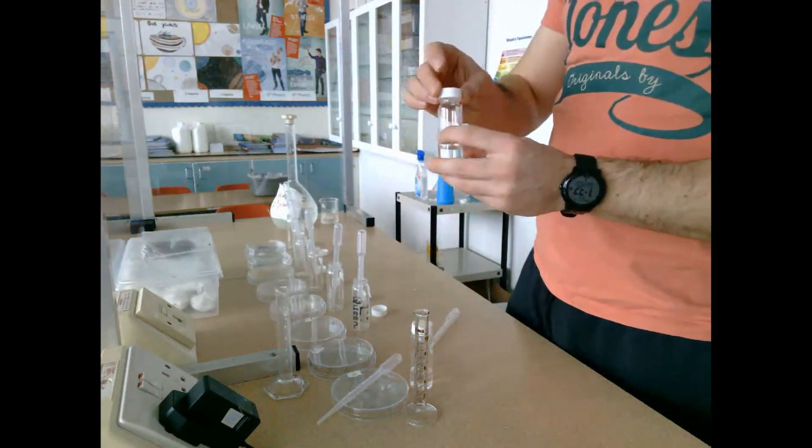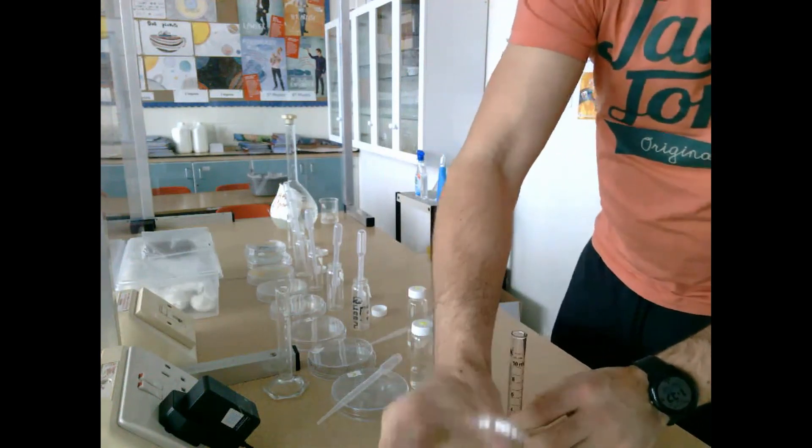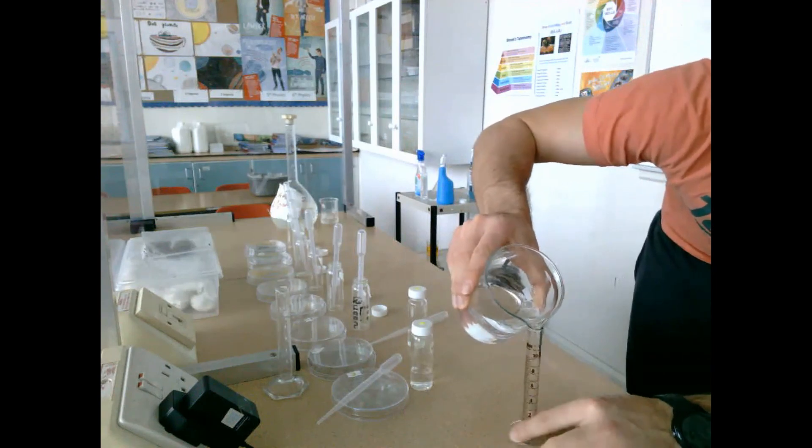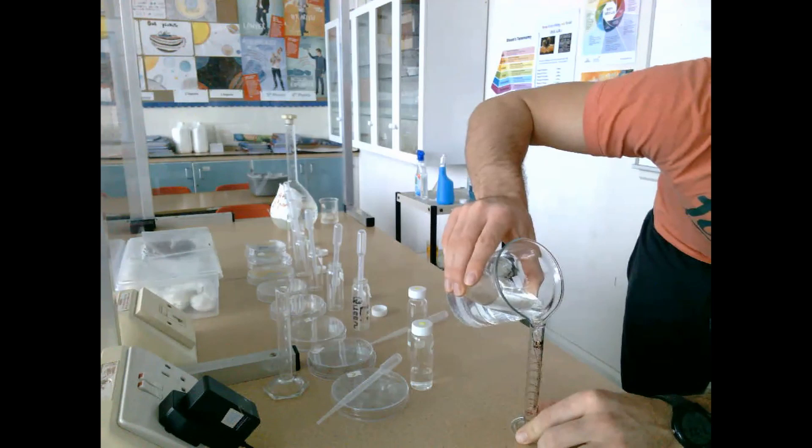Once we have glass jar one done, we can carry out a serial dilution. We measure out another nine milliliters of water and add it to glass jar number two.